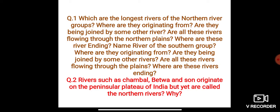These southern rivers are joined by a lesser number of other rivers than the northern rivers. Northern rivers are joined by many other rivers as they flow from the Himalayas, whereas southern rivers flow from the peninsular plateau and have fewer rivers joining them, flowing towards the coastal plain.